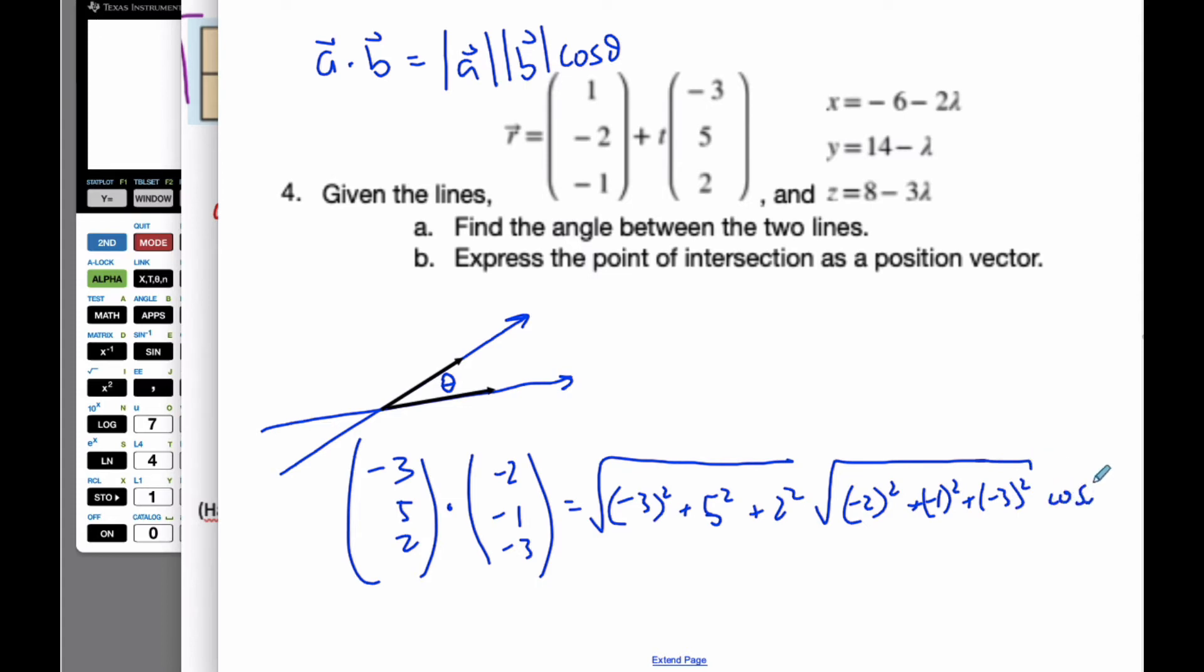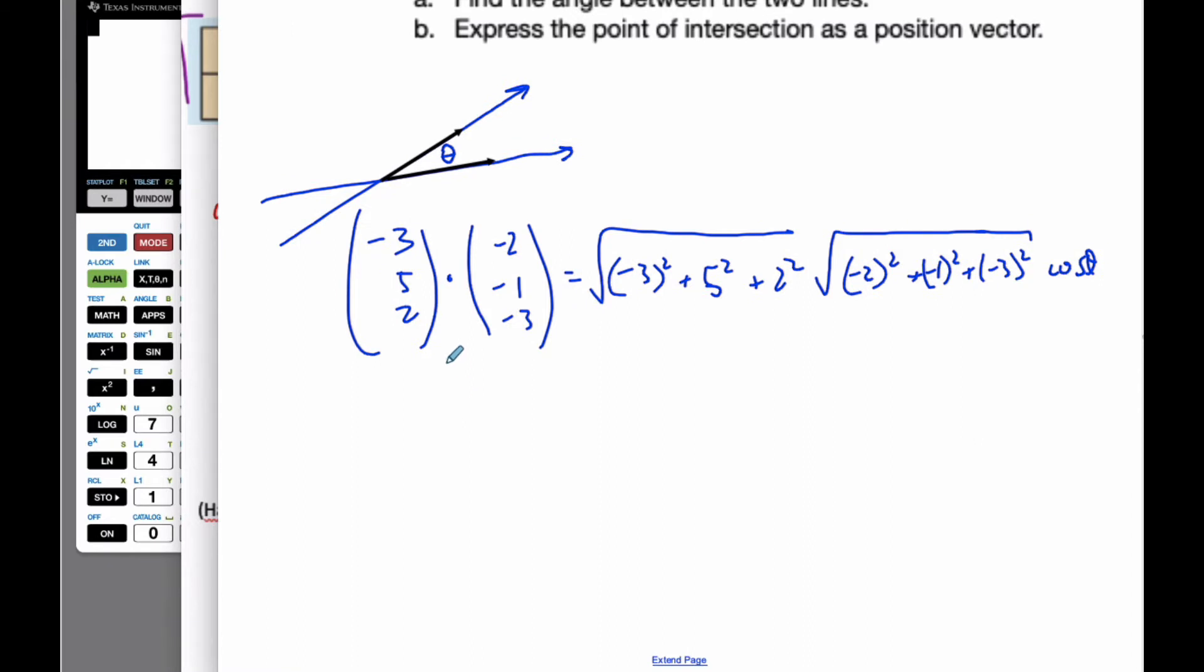I'm going to put cosine theta on the end. Doing this, I get negative 6, plus negative 5, subtract 6 more.